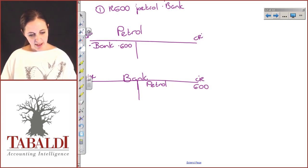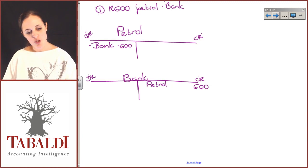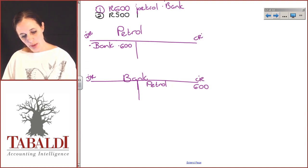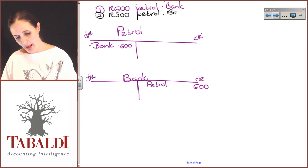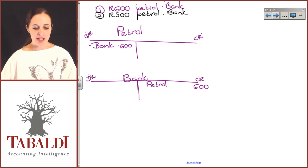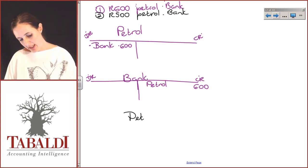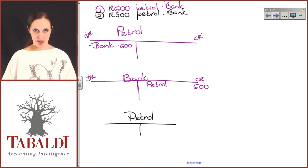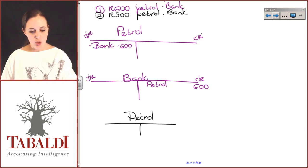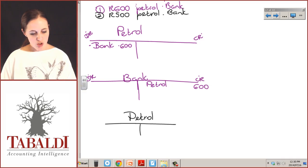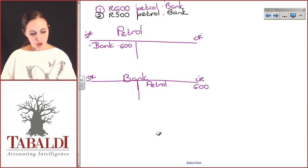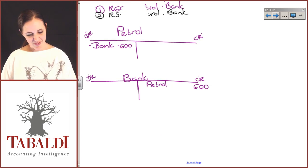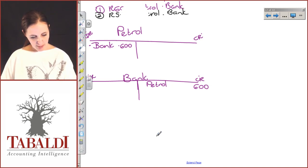A few days later, there's another transaction — you spent another 500 rand on petrol, and you also took this money from the bank account. It doesn't make sense to create a new petrol account because I already have one. If you opened a new account each time, the accountant or business owner would have to go and find all the little petrol accounts to know how much was spent. So if there is already an account, you use the existing account to post that transaction into. I already have a petrol account, which I'm going to use.